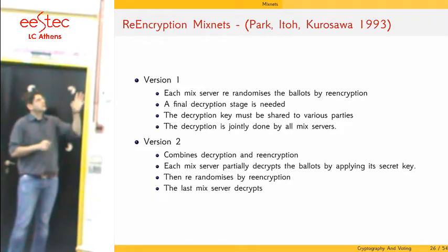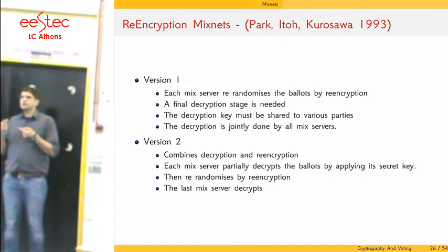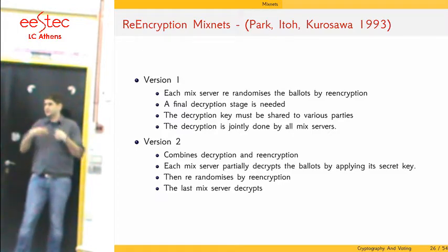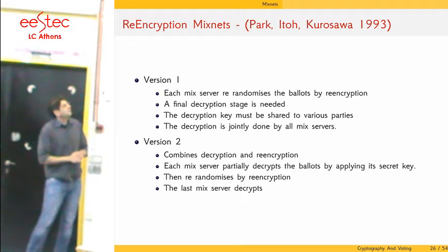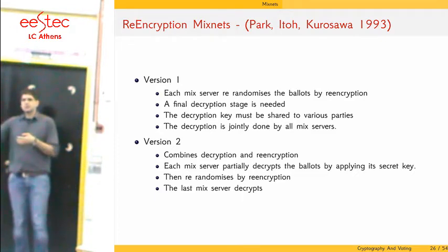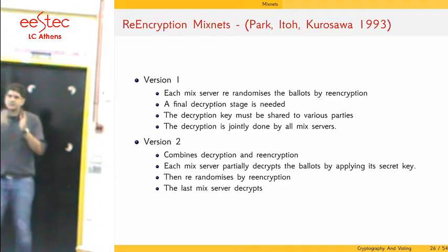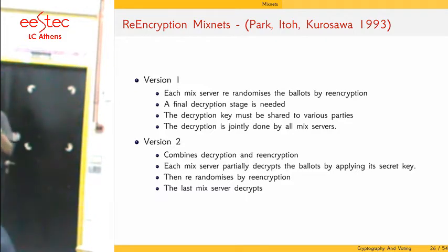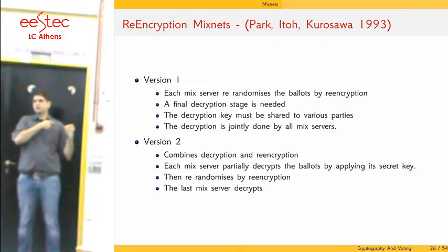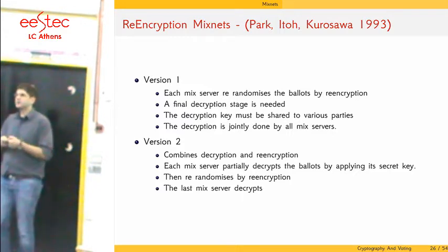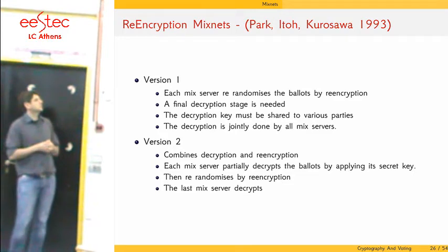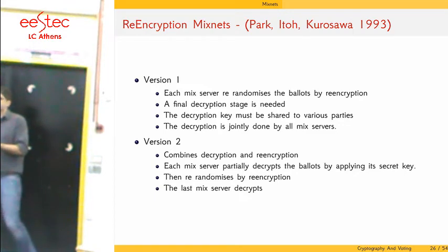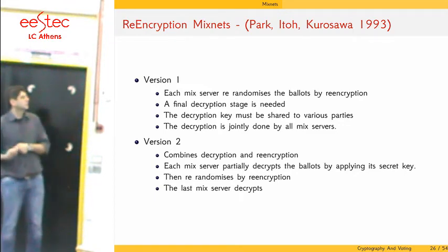Another variation of MixNets is due to Park, Itoh, and Kurosawa in 1993. It does not use decryption but re-encryption — changing the ciphertext of the votes. After all mix servers apply re-encryption, there is an extra decryption phase at the end. To avoid any single mix server being too powerful, we can use the threshold decryption scheme mentioned earlier and distribute the decryption key to many parties. A further variation combines both re-encryption and partial decryption — peeling off and re-encrypting.